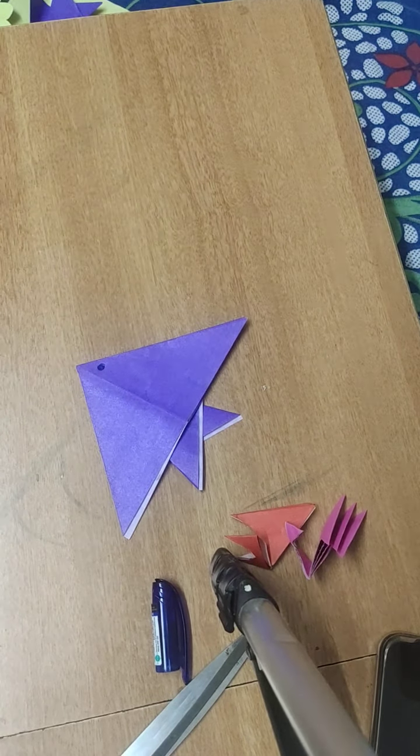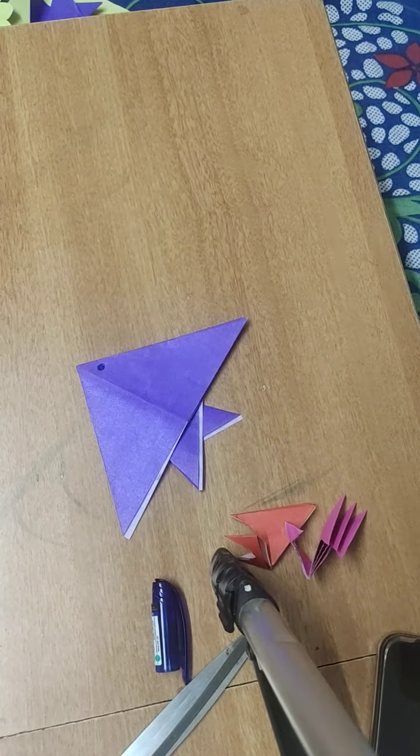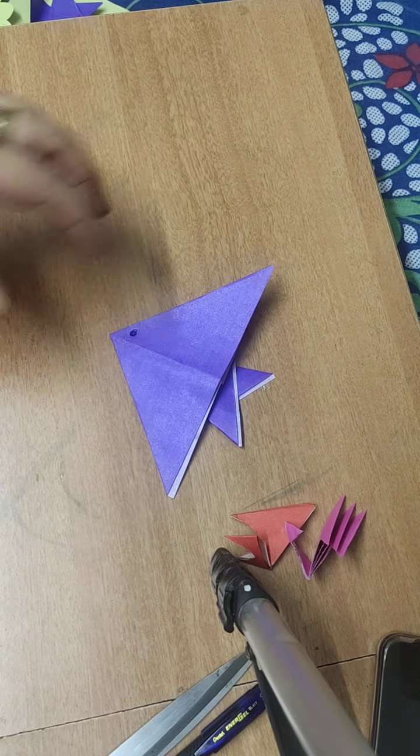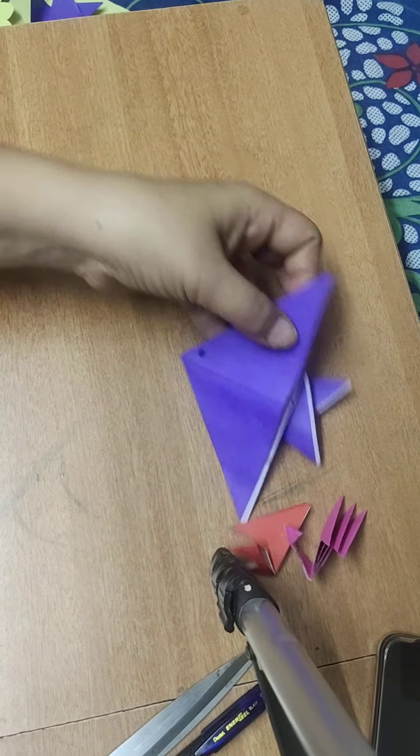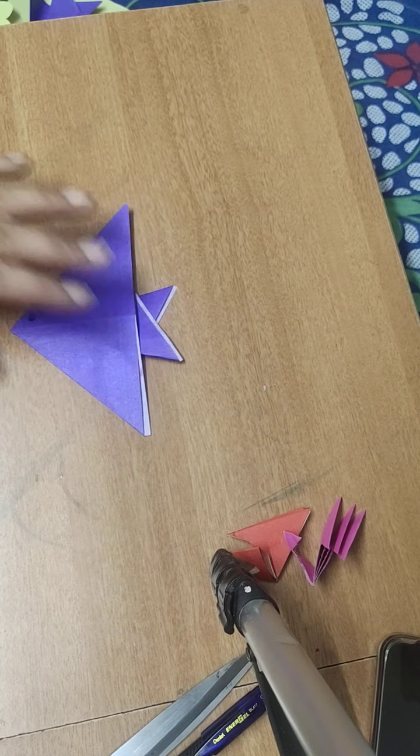And similarly half, half. Here you can check it out, this slanting line is on some distance now. Okay, similarly now you will fold this. It will cover it. And if you turn it, here is your fish.